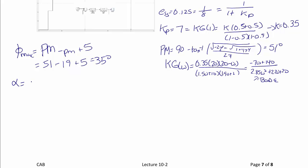From that we calculate alpha. Alpha is equal to 1 minus sine phi_max over 1 plus sine phi_max, which equals 0.27.